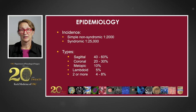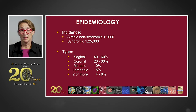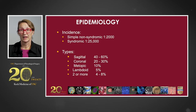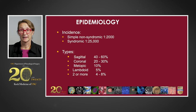Sagittal synostosis is the most common type, within 40 to 60 percent of cases. Coronal synostosis, both bicoronal and unilateral coronal, make up about a quarter of the cases. Metopic synostosis accounts for about 10 percent of all cases, with lamdoidal synostosis being the most rare at about 5 percent. Occasionally, children will have two or more cranial sutures that are fused, again about 4 to 8 percent of all cases.